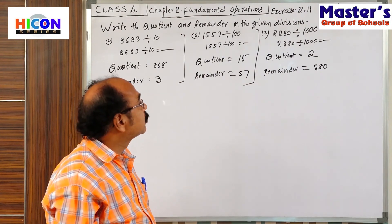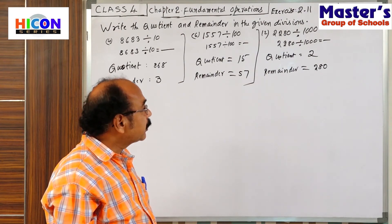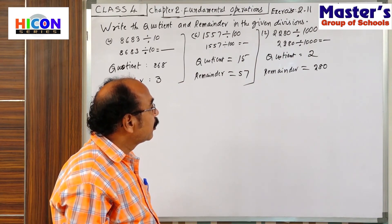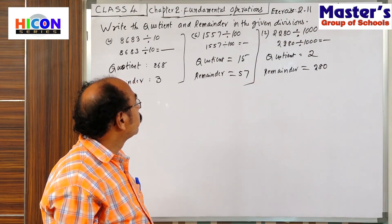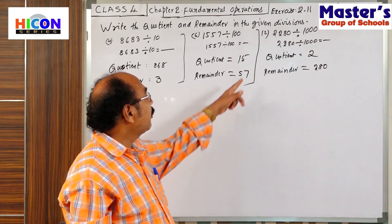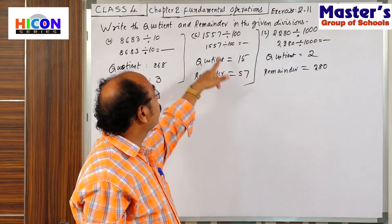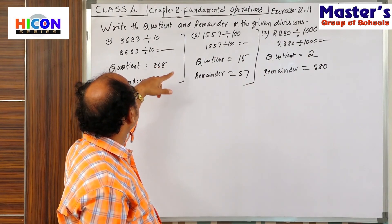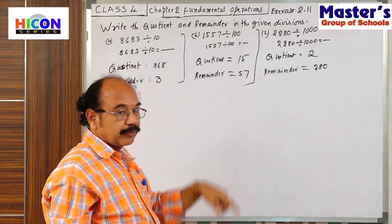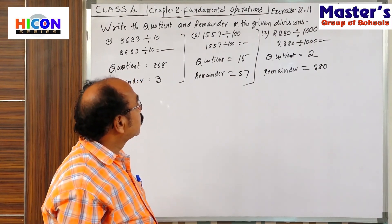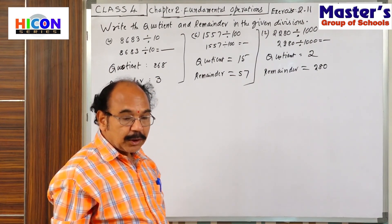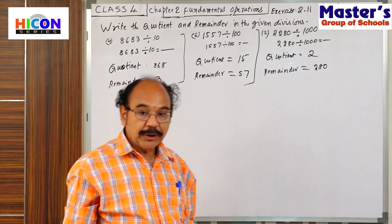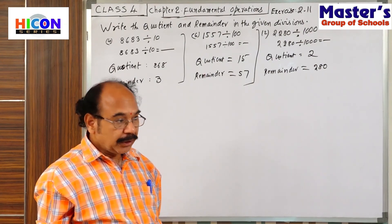2 into 1000 is 2000, plus 280. Check: 2000 plus 280. Also, 1500 plus 57 equals 1557. And 868 tens plus 3. Like this — with the help of the key points, very easily you can write the quotient and the remainder without taking more time.